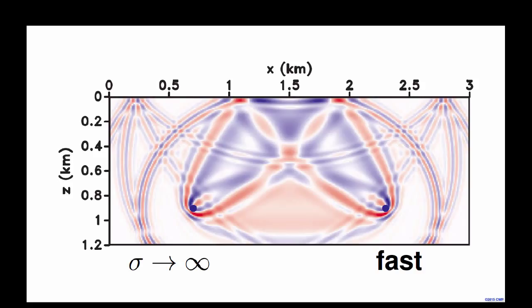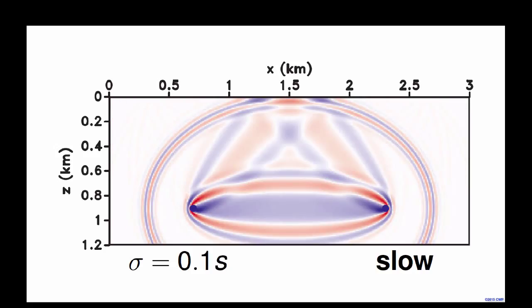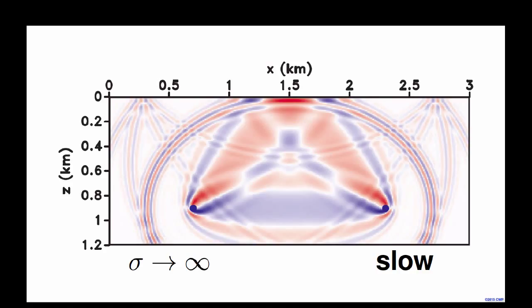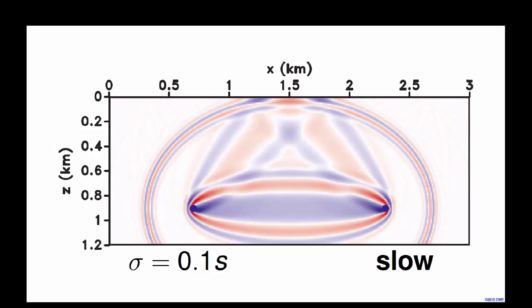Comparing both gradients for fast velocity: the global correlation gradient versus the local correlation gradient. The local correlation gradient is much simpler and easier to interpret, and the design of the gradient is better preserved through the Gaussian window.